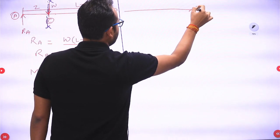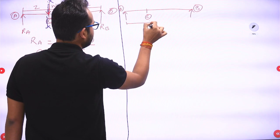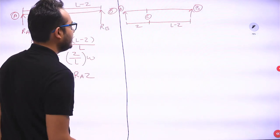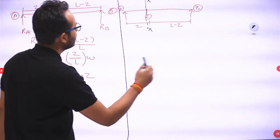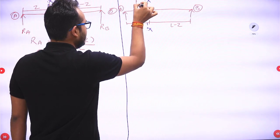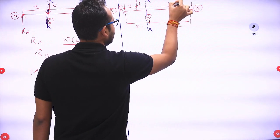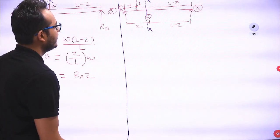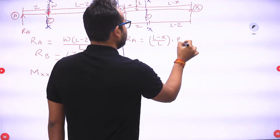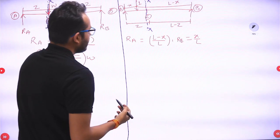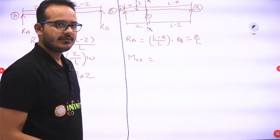Now in this simply supported beam A and B, C is at Z distance from A and L minus Z from B, total span L. We consider section XX just to the left of C. We apply a unit load at distance X from support A, so the remaining distance is L minus X. Therefore RA equals (L minus X) by L, and RB equals X by L. For bending moment at section XX from the left, RA acts at distance Z, and the unit load acts at distance Z minus X from this section.